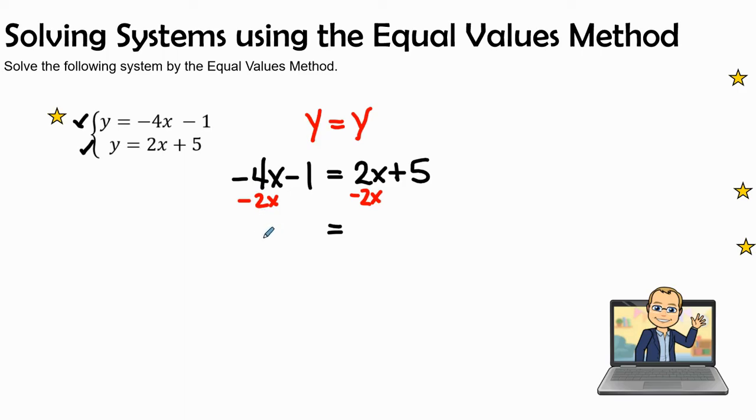This gives me negative 6x minus 1. The positive 2x and the negative 2x form 0, so I'm going to bring down a positive 5. I'm going to add 1 to both sides.